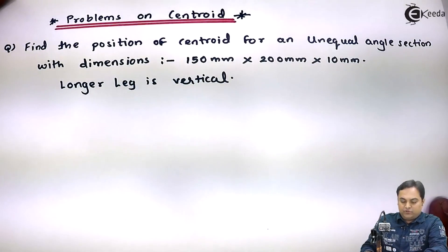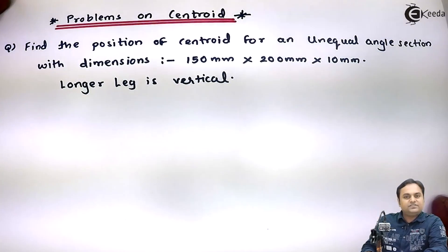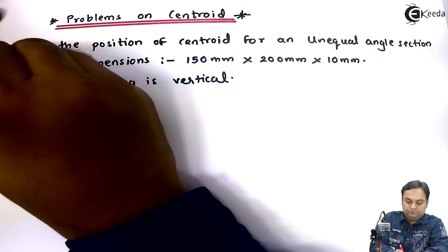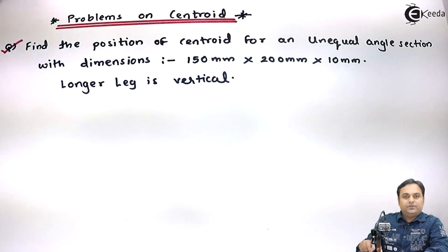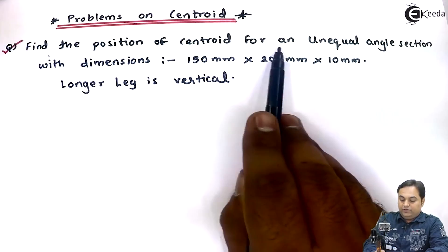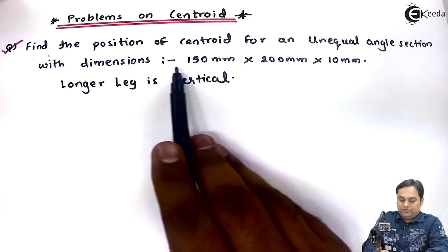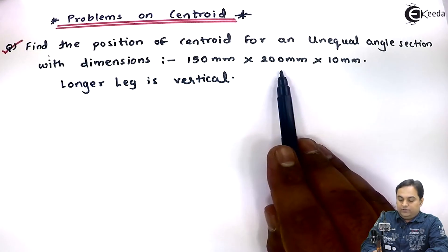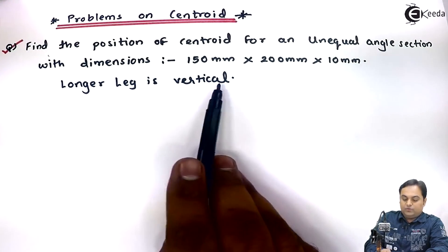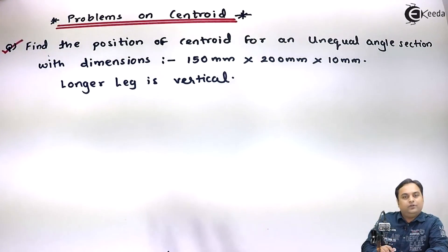In this video, I would be solving the problem on centroid. Let us take question number 1. Find the position of centroid for an unequal angle section with dimensions 150 mm x 200 mm x 10 mm, and the longer leg is vertical. Let us try to solve this problem.